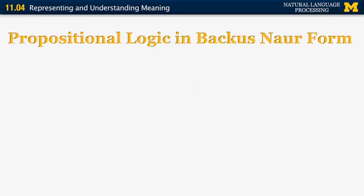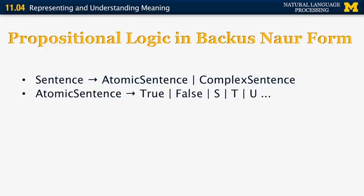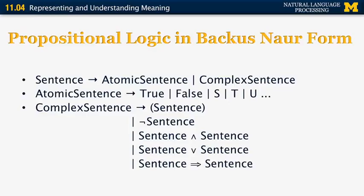So propositional logic can be expressed in BNF, or Backus-Naur form in the following way. So a sentence is either an atomic sentence without any operators or a complex sentence. An atomic sentence is either true or false or any individual sentence that represents a proposition, S, T, U, and so on. A complex sentence is a sentence in parentheses or a negation of a sentence or a conjunction or disjunction or an implication or a biconditional.